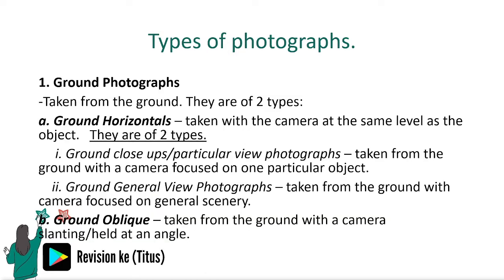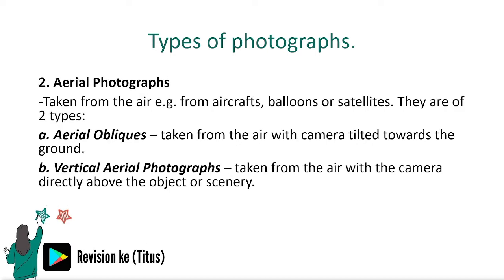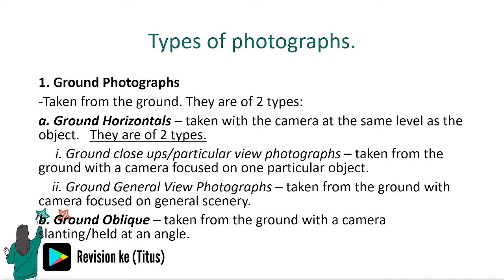So, types of photographs: we have the ground photographs, which are taken from the ground, and we have the aerial photographs. They also have their own subtypes. For photographs taken from the ground, there are two types: the ground horizontal, taken with the camera at the same level as the object, and the ground oblique, which is taken from the ground with the camera slanted or held at an angle.